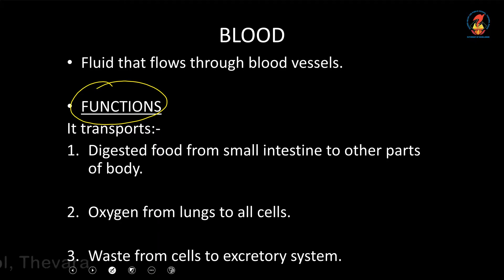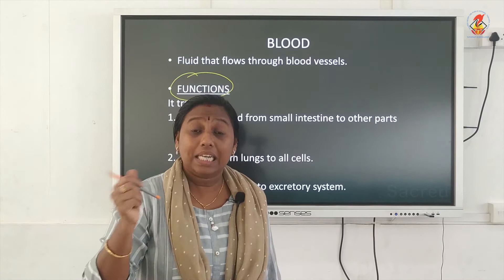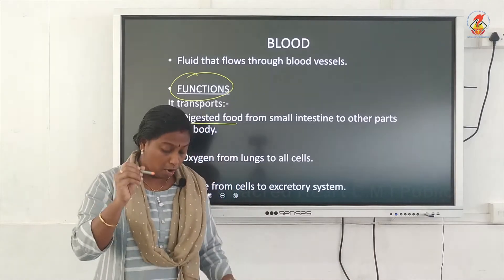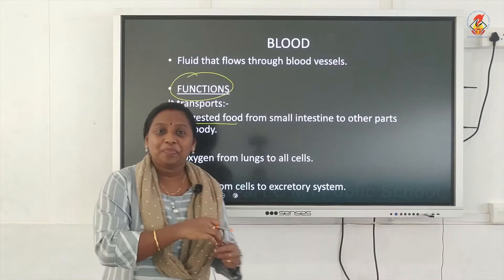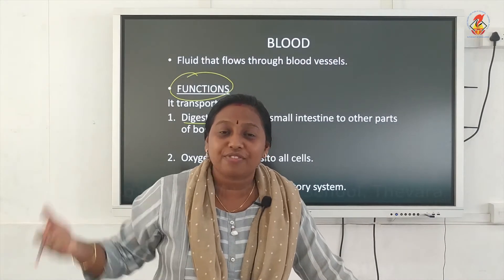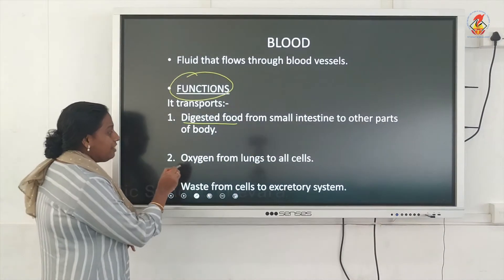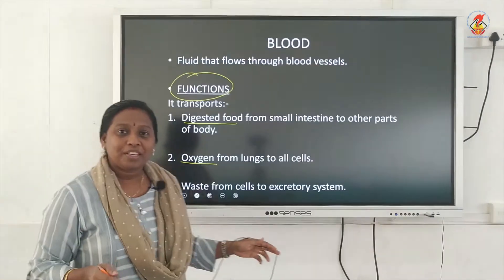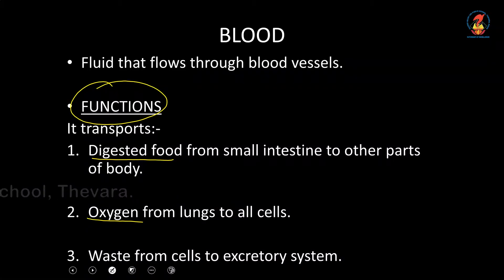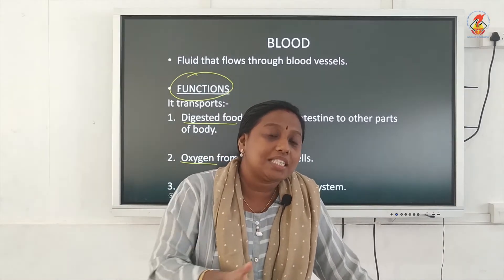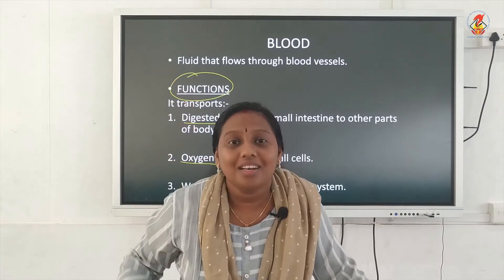The first function of blood is transporting all the digested food. The process of digestion occurs in your digestive system and is completed in your small intestine. From the small intestine, the digested food is absorbed by small finger-like projections called villi. The blood will take all the nutrients from the villi to each and every cell of your body. The second function of blood is the transport of oxygen. When you respire, oxygen enters into your lungs and your respiratory system, filling your lungs with oxygen. This oxygen in your lungs has to be taken by the blood to the cells of your body.